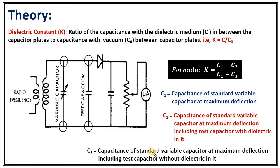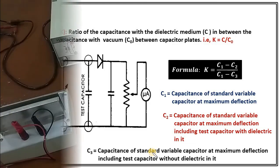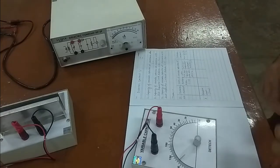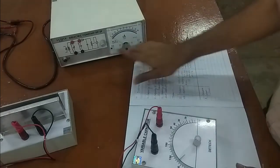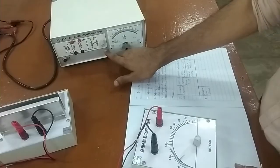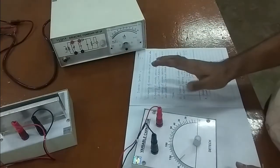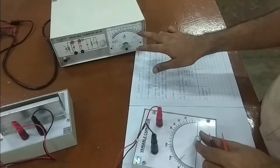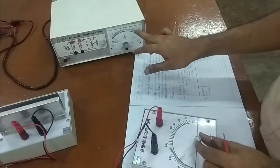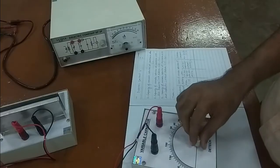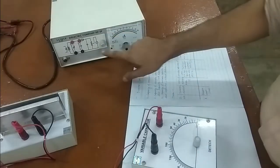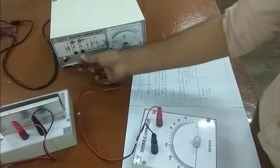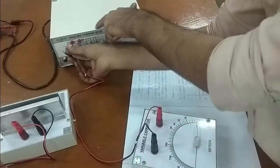Now let's see the demonstration. Initially, we need to adjust the sensitivity using the sensitivity knob, so that the maximum deflection of the current is in the range of 90. Once adjusted, we connect the variable capacitor to find C1.